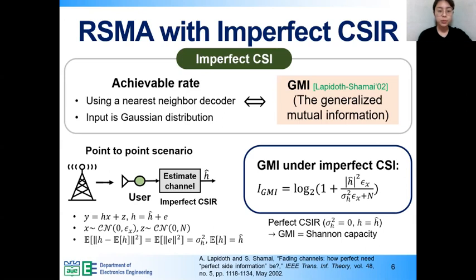One of the problems with imperfect CSIR is that it is difficult to determine an explicit achievable rate, since the user does not know the actual channel. To solve this problem, the concept of generalized mutual information, called GMI, is used in order to characterize the achievable rate. It has been revealed that GMI corresponds to an achievable rate when a user uses a nearest neighbor decoder and the input is Gaussian distribution.